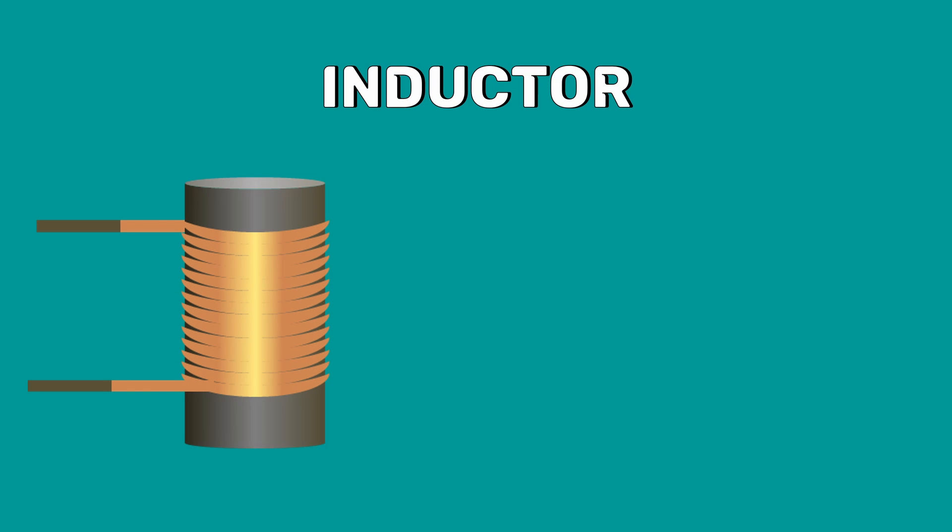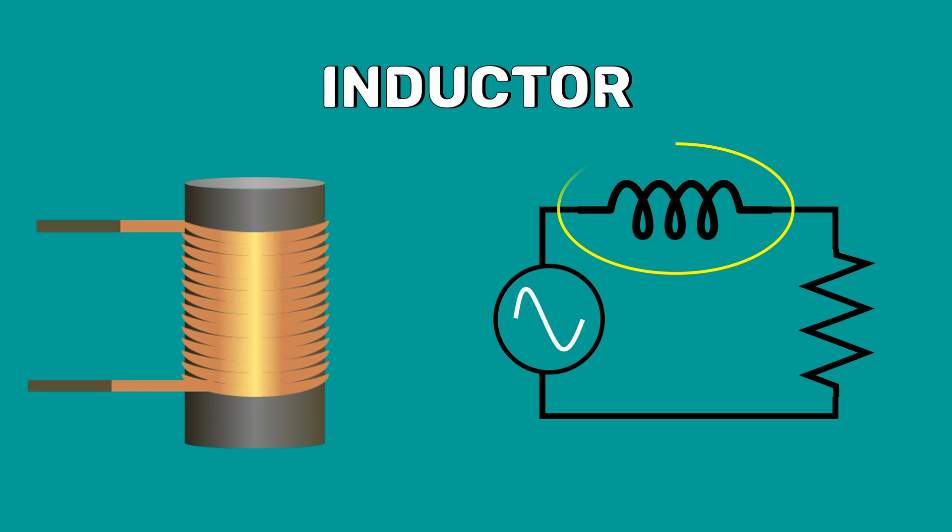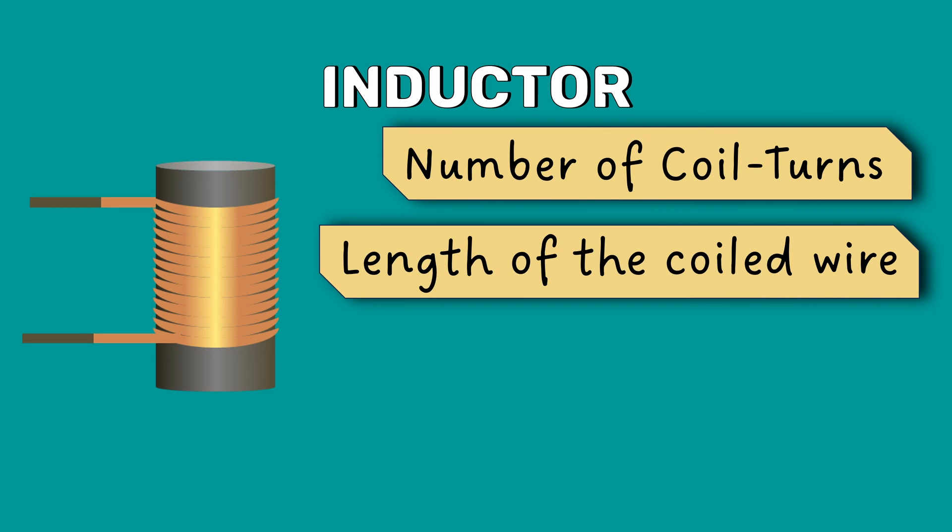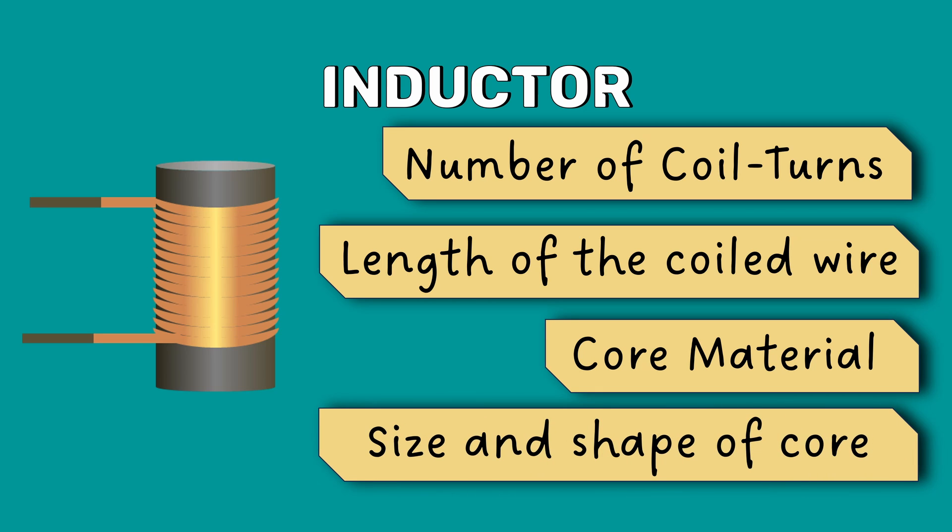An inductor is an electronic component designed to add inductance to the circuit. It typically consists of a coil of wire. The inductance of the coil can be increased by placing a magnetic core in the hole in the center. Many factors can affect an inductor's level of inductance, including the number of coil turns, the length of the coiled wire, the material used for the core, and the size and the shape of the core.